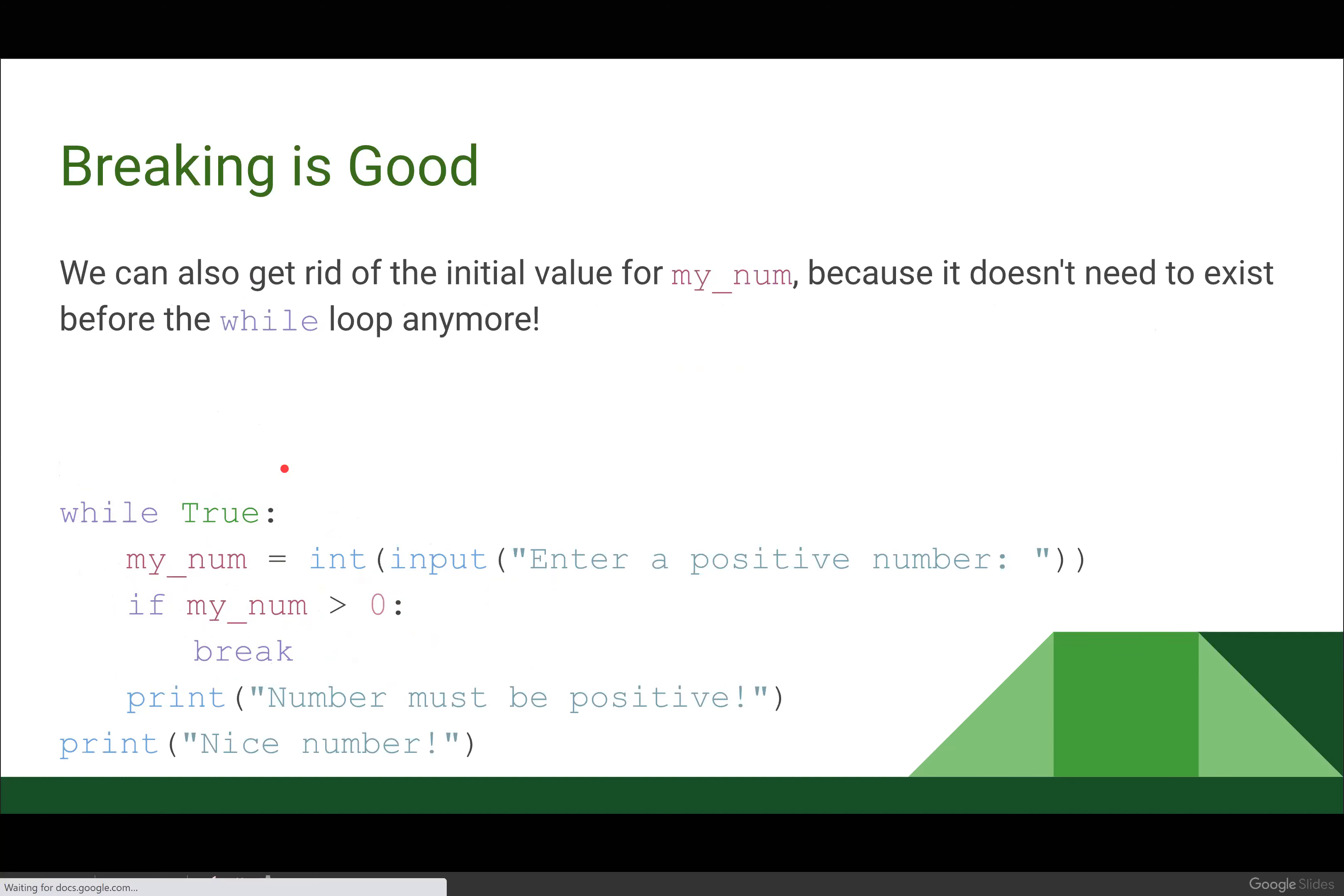And we can also get rid of that initial value for my_num, because we don't need it for that condition, or that condition doesn't exist. So we don't need my_num to exist before our loop starts. So our finished while loop here is going to say while True, we're going to get our user input. If their number was greater than zero, if it was not negative or zero, or if it was a positive number, we're going to break, and then we can print nice number.